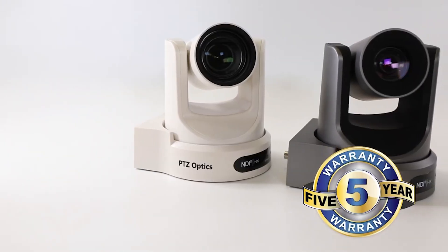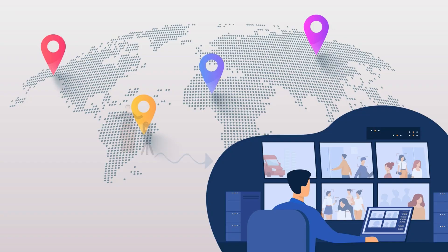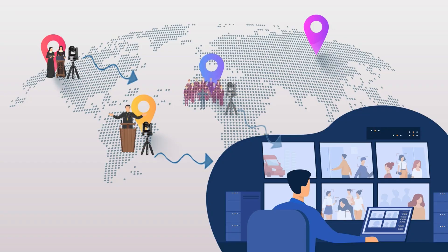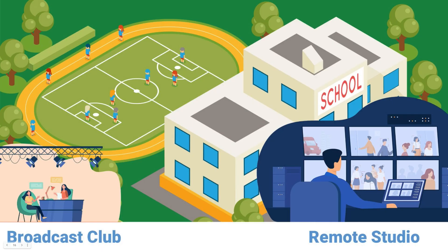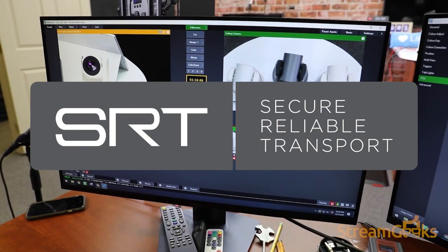Because PTZ Optics cameras now support SRT, you may be considering ways to use SRT over the public internet. SRT would be ideal for sending a camera out into the field, beyond your local area network. In this way, you can set up a few cameras with SRT at a sports game and then produce the video remotely in your production studio. A prime example of SRT would be to send your PTZ Optics camera's video feed to a remote production area for video switching.